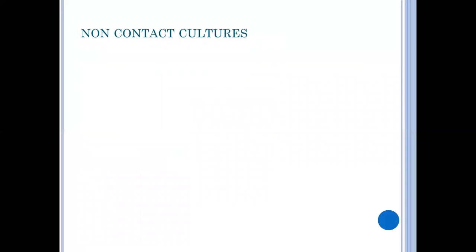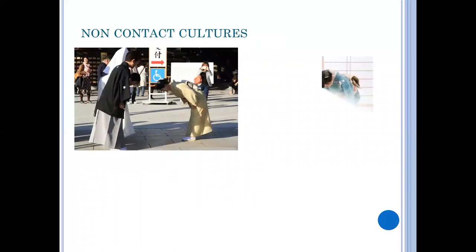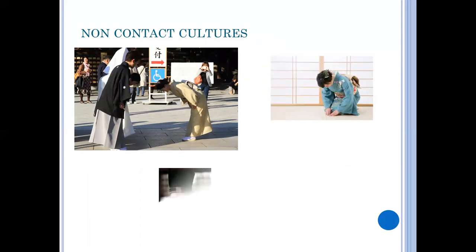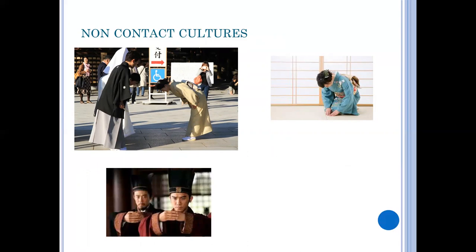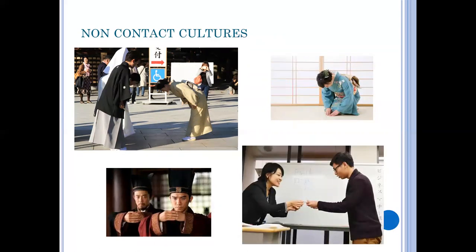Non-contact cultures, such as those in Northern Europe and Japan, maintain a greater distance between communicators, with little to no touch and less eye contact. One of their common gestures is bowing or avoiding touching the hand of their communicator, while still showing great respect. Contact and non-contact cultures provide a good example of cultural differences in communication.